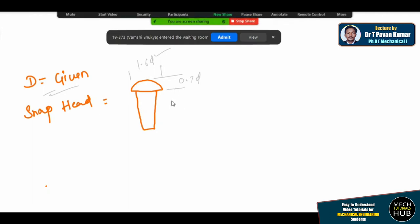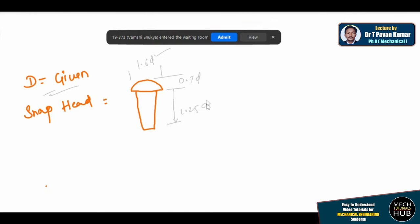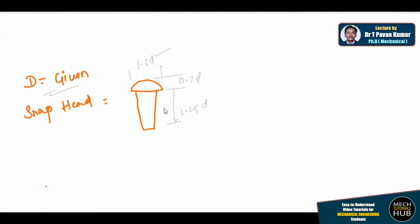We have seen different types of riveted heads, and we are focusing on the snap head and how to draw it. If you are familiar with one simple head arrangement, other types can be drawn easily. In the examination, they will directly ask you to represent a riveted joint — meaning you need to show the front and top view of the complete arrangement, not just the head. We also need to remember a few more formulas.